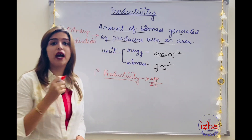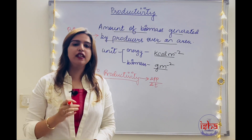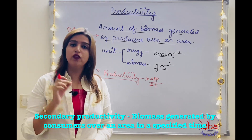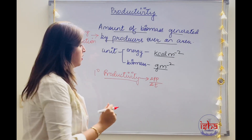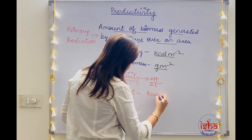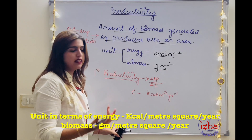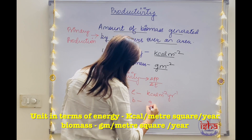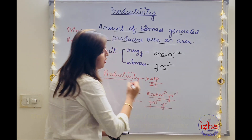Similarly, secondary productivity is the biomass generated by the consumers over an area in a specified time. What are the units? In terms of energy, it is kilocalories per meter squared per year. In terms of biomass, it will be grams per meter squared per year. This is productivity.